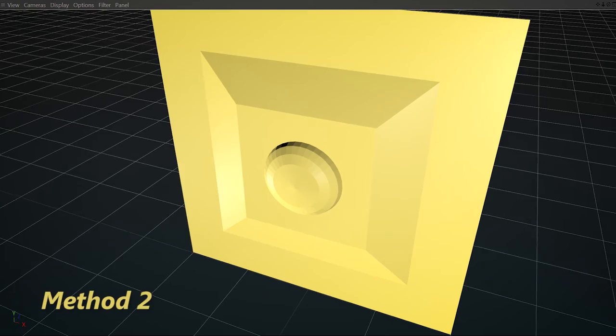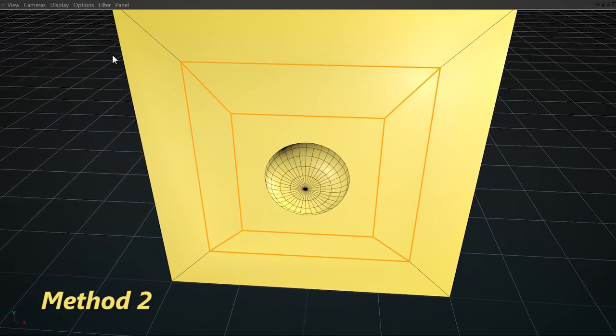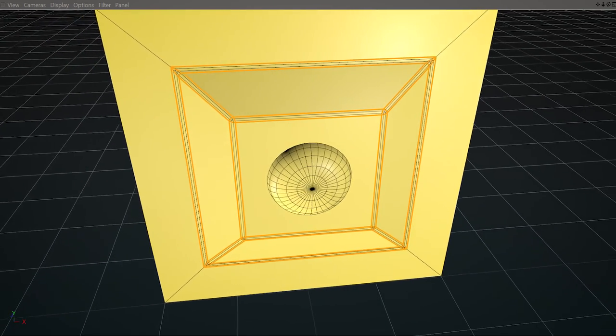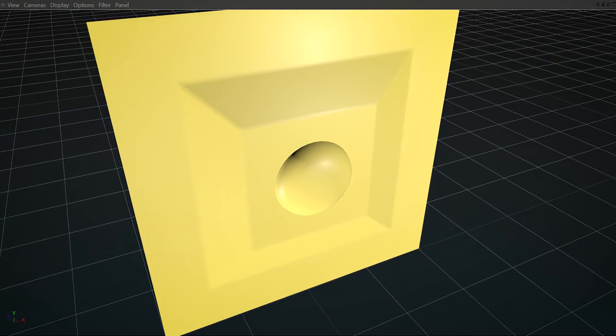The second one is by adding extra edges. We can do this with any modeling tool available. By doing this, we're forcing the smooth transition to occur in one small area, leaving everything else nice and flat.